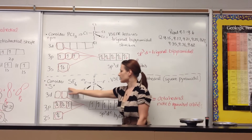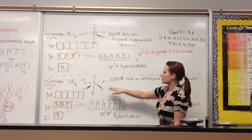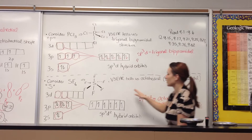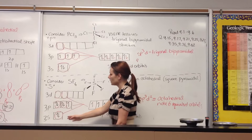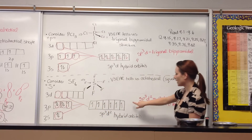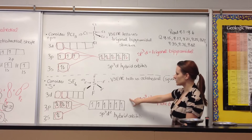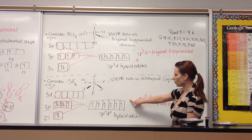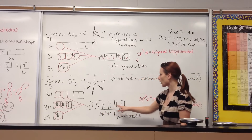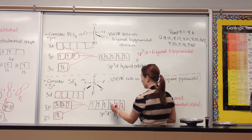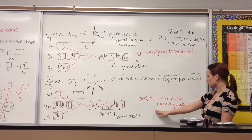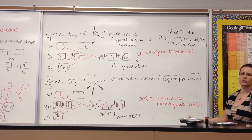Similarly, let's talk about sulfur hexafluoride. Sulfur hexafluoride gives us an octahedral structure. We have to combine the S, three P's, and two D orbitals to make six equivalent SP³d² hybrid orbitals — each with one unpaired electron. Each of the six fluorine unpaired electrons can then pair, and you get your octahedral shape. SP³d² gives octahedral geometry with six equivalent orbitals.